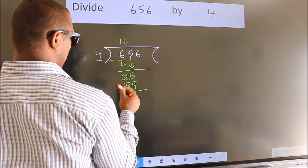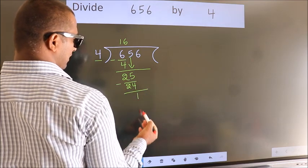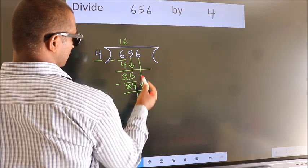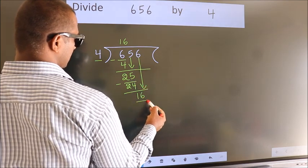Now we subtract. We get 1. After this, bring down the beside number. So 6 down, 16.